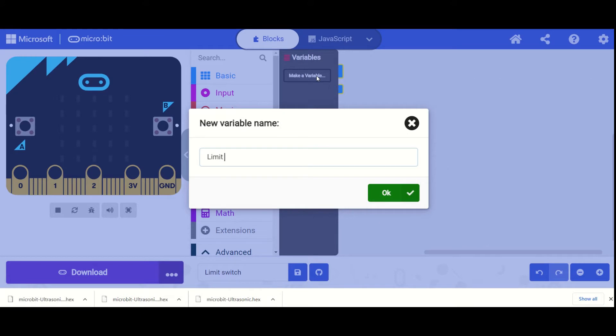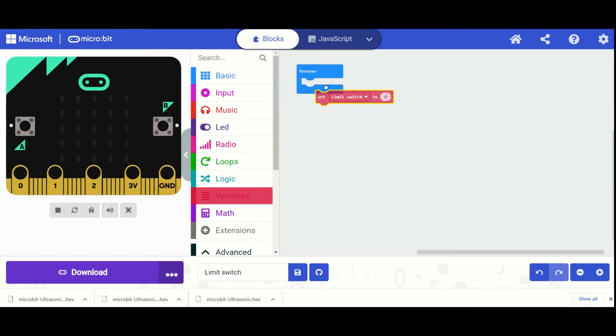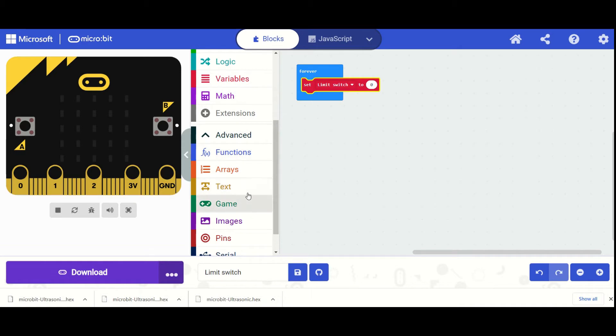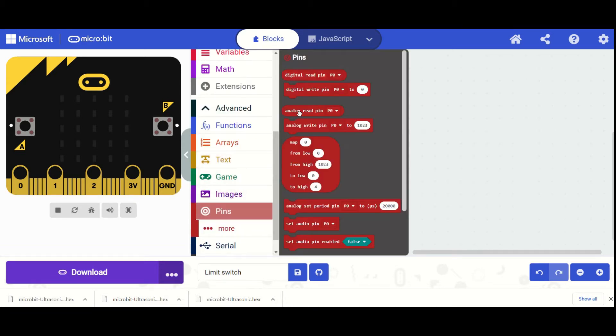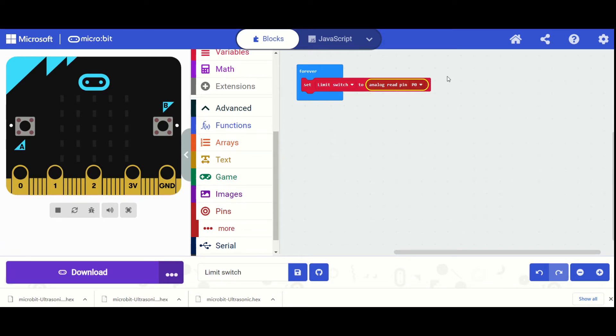And when we've made that variable, we're going to get this set block, and we're going to use set limit switch to, and then we're going to find our pin which we've connected up to our limit switch. The pin we used other than ground was pin 0, and we're going to say analog read pin 0, like so. If you selected another analog pin, you can change it to that pin here, but we picked zero so we're going to leave it at that.